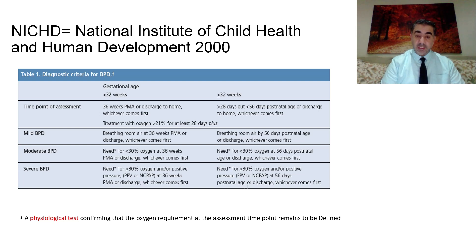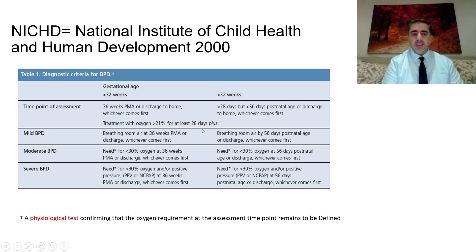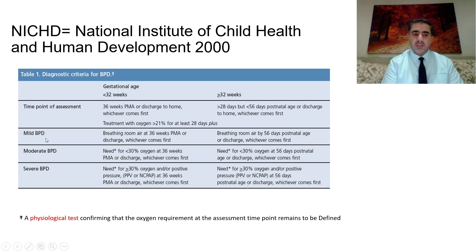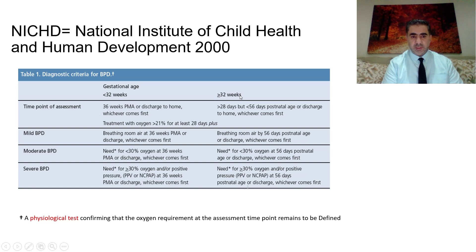Three clarification points: First, if the baby needs more than 21 percent oxygen for at least 28 days before reaching the point of assessment, this baby is classified as having bronchopulmonary dysplasia. But to classify as mild, moderate, or severe, we have to wait until 36 weeks for babies less than 32 weeks, or 56 days for babies more than 32 weeks gestation.